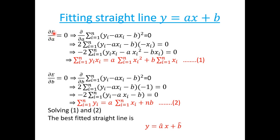Partial derivative of E with respect to a: ∂E/∂a = 0 implies summation(yi·xi) = a·summation(xi²) + b·summation(xi). [Equation 1]. Partial derivative of E with respect to b: ∂E/∂b = 0 implies summation(yi) = a·summation(xi) + nb. [Equation 2]. Solving equations 1 and 2, we will get the values of the parameters a and b. Substituting the values of a and b, the best fitted straight line is y = â·x + b̂.